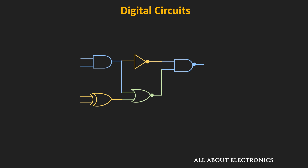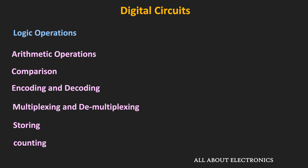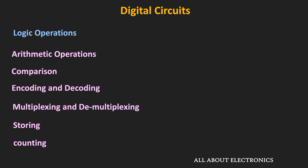In the upcoming videos, we will learn about the different logic gates and how various functions can be implemented using them. In general, there are two types of digital circuits: combinational circuits, where the output depends only on the present input, and sequential circuits, where the output depends on both the present input and past outputs — meaning they have a memory element. A flip-flop is a basic sequential circuit that stores one bit of information. Using combinational and sequential circuits, operations such as addition, subtraction, comparison, encoding/decoding, multiplexing/demultiplexing, storing, and counting are all possible.